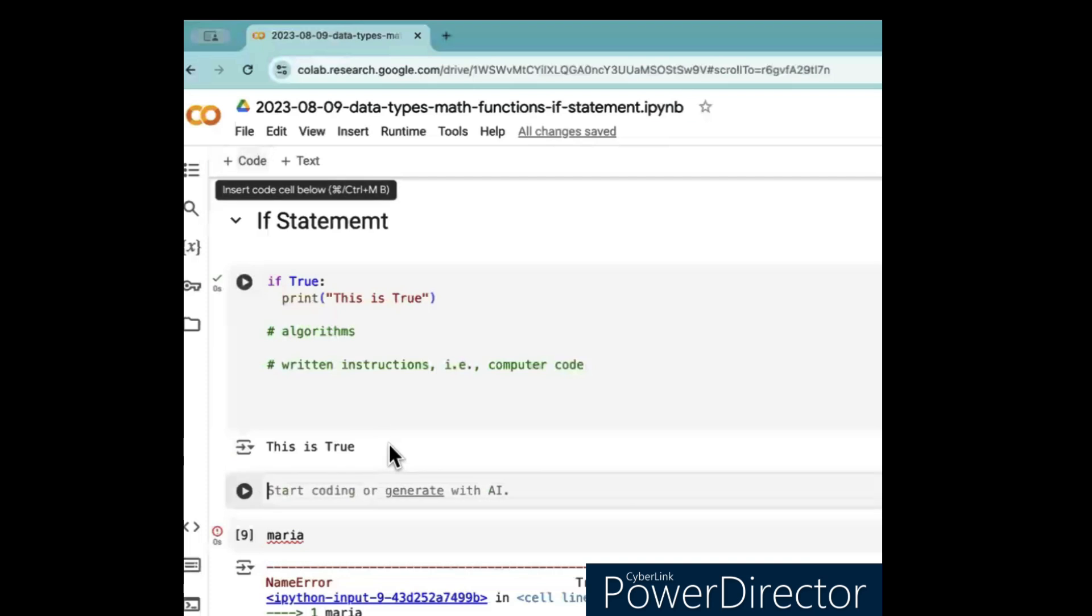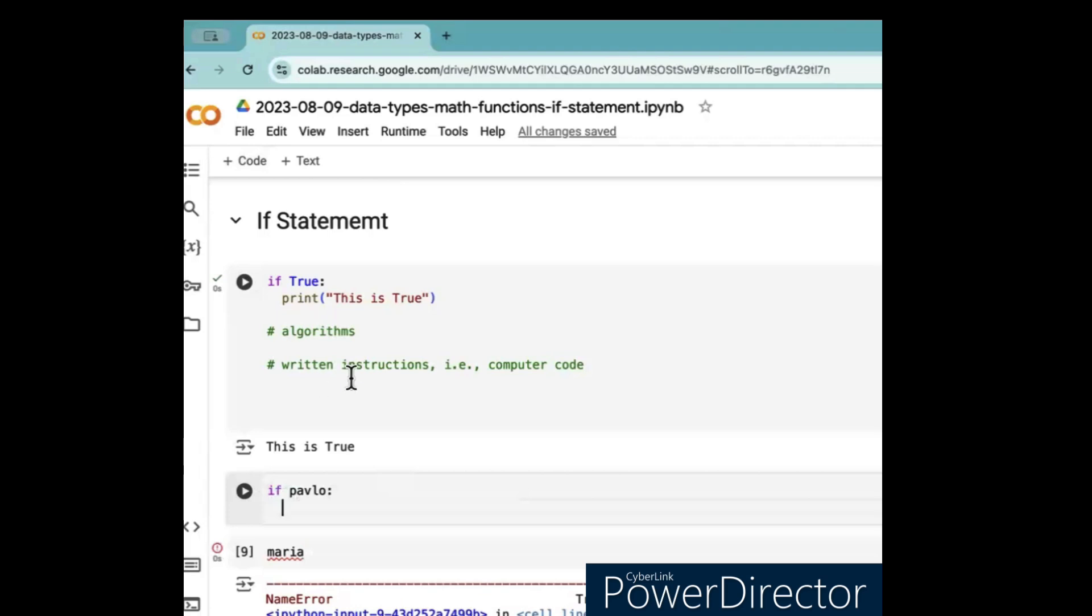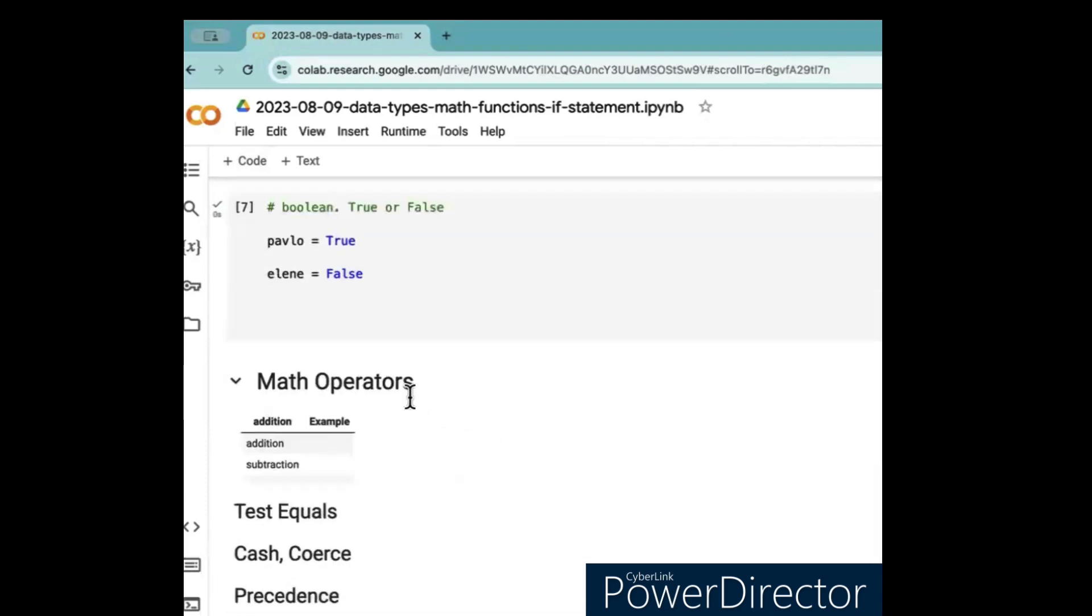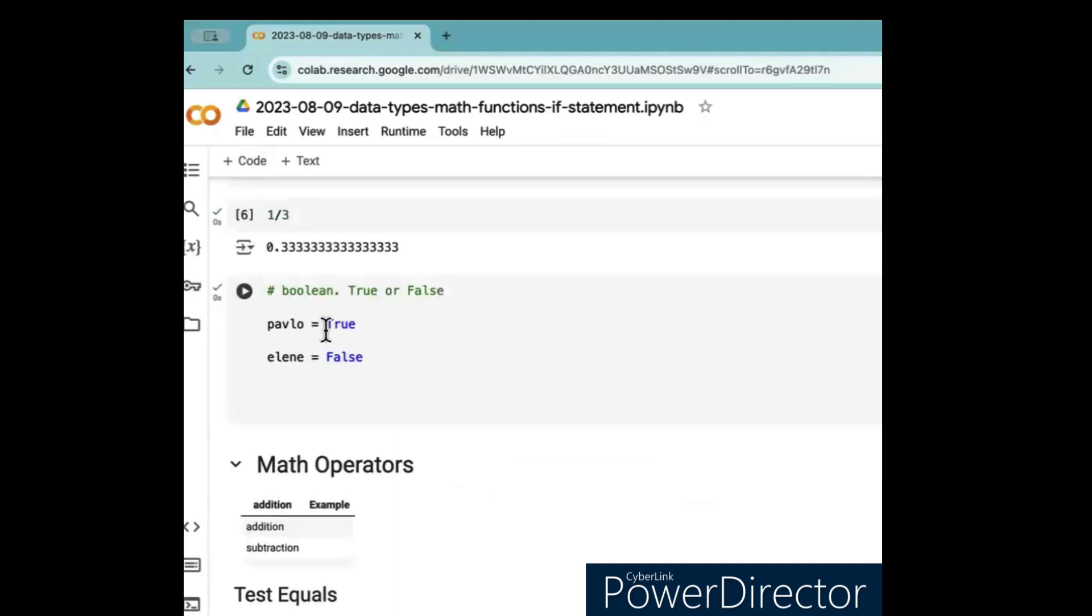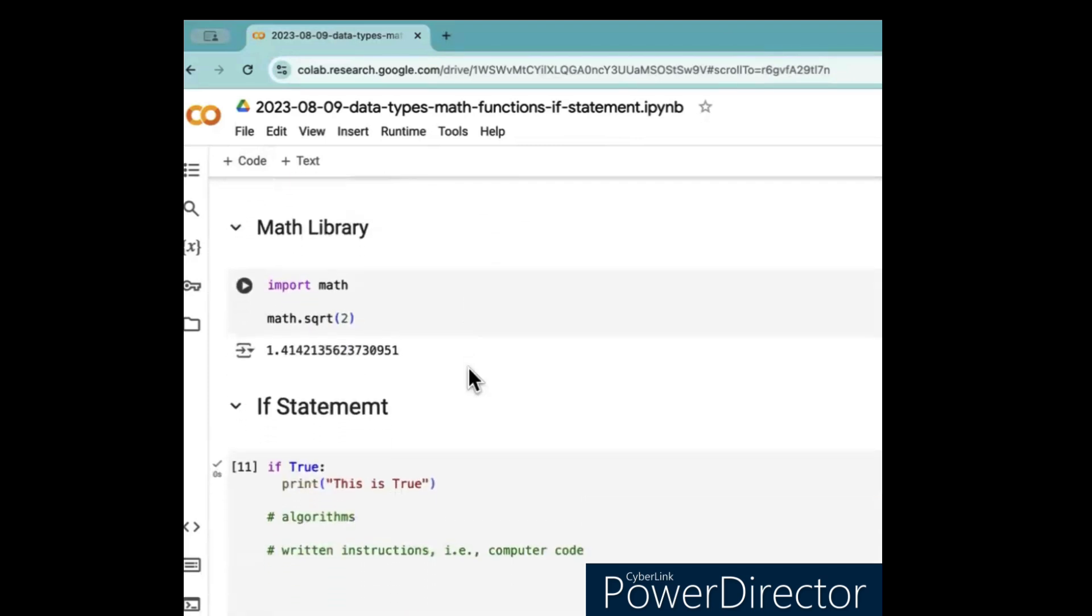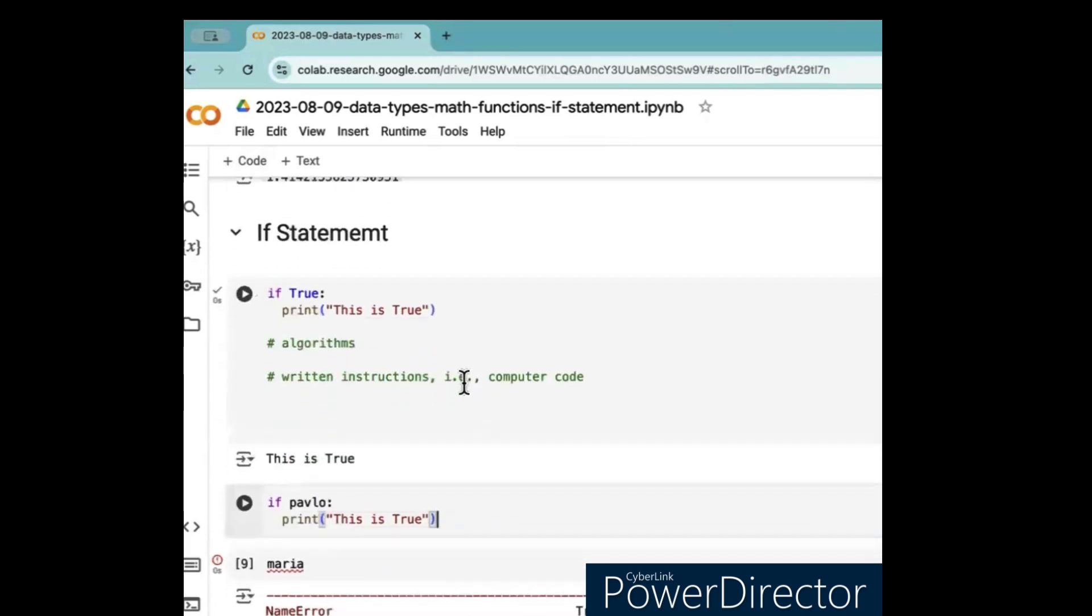Now, what if I put this? If Pablo... What's that going to do? Make an error? No. What is Pablo equal to? It's going to print true. This is true. If we put Pablo up here, true, see? That is going to print, this is true. Yeah.